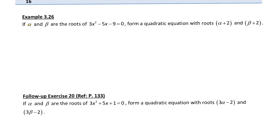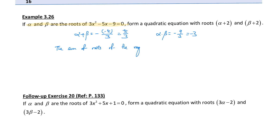As I mentioned before, if you see this type of problem, most probably you need to use the sum and product of roots. So I will write down: alpha plus beta is equal to negative 5 over 3. Alpha times beta is equal to negative 9 over 3, which is equal to negative 3. So, using the same idea, the sum of roots of the required equation is alpha plus 2 plus beta plus 2, which equals alpha plus beta plus 4. Since alpha plus beta is negative 5 over 3, that gives us negative 5 over 3 plus 4, which equals 17 over 3.